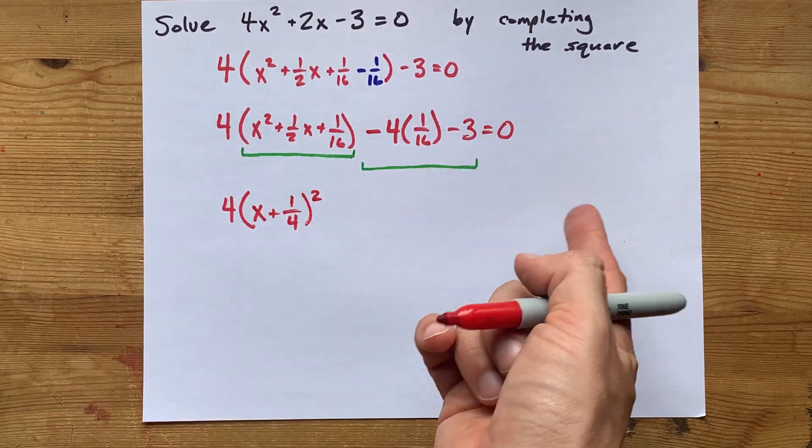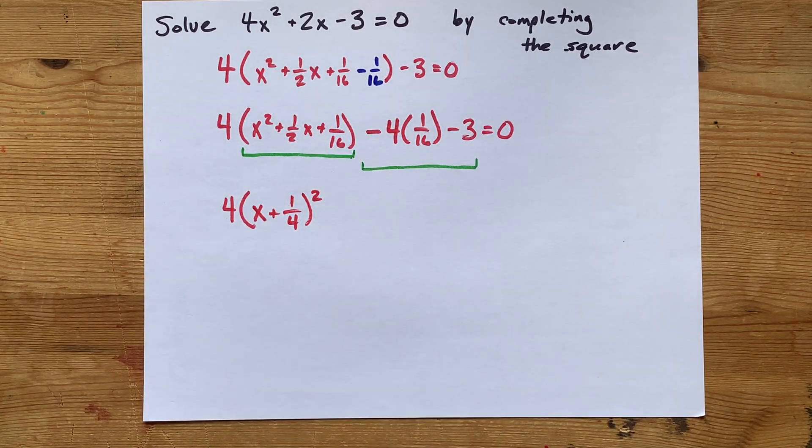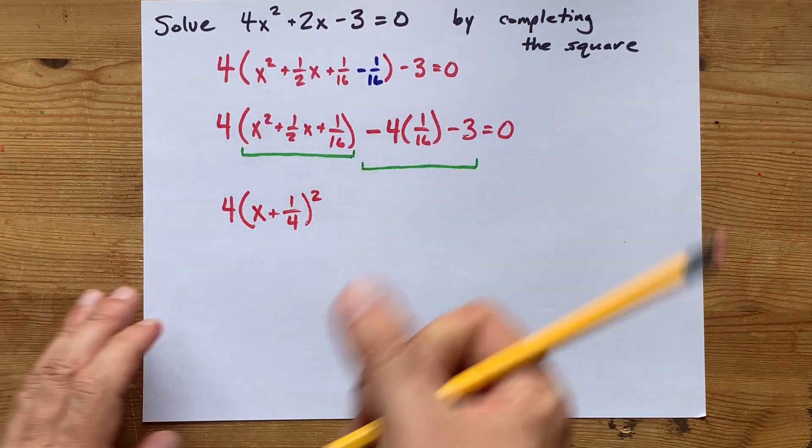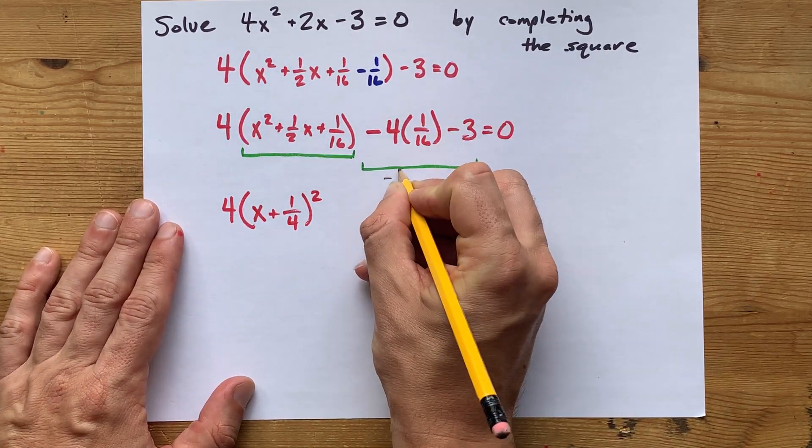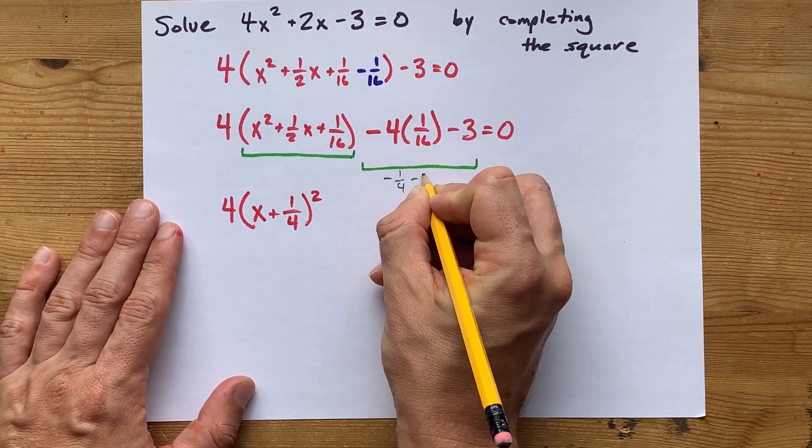And then this is just some math you can do on your calculator. Maybe you don't need the calculator. Maybe your teacher doesn't let you use it. Four times 1/16th is 1 quarter. So, what we actually have here is negative 1 quarter minus an extra 3.